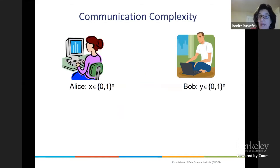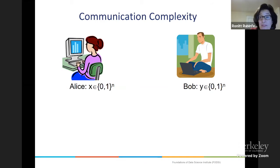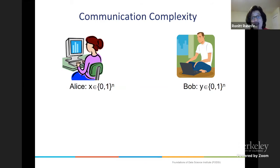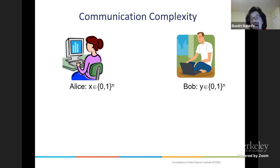Communication is very hard. This is a classical model of communication complexity — it's been around since the 80s. What's great about this model is there are a lot of deep results, and they're super useful because we can use them as a black box in all the other models. So I really want to talk about this model.